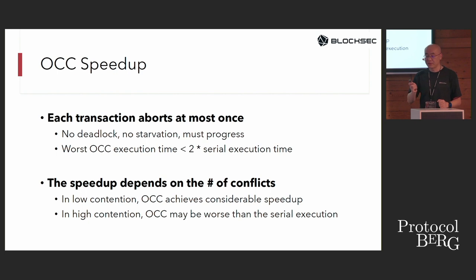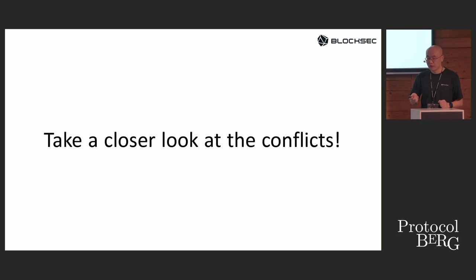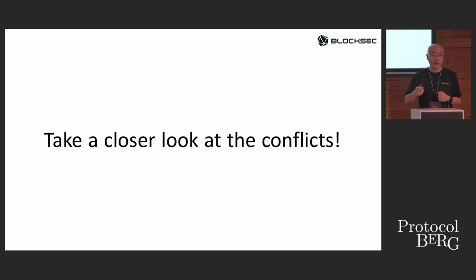In the worst case, if every transaction has a state dependency with others, we get no speedup — in fact, performance is even worse because we execute all transactions and then re-execute them. So the speedup depends entirely on the number of conflicts.